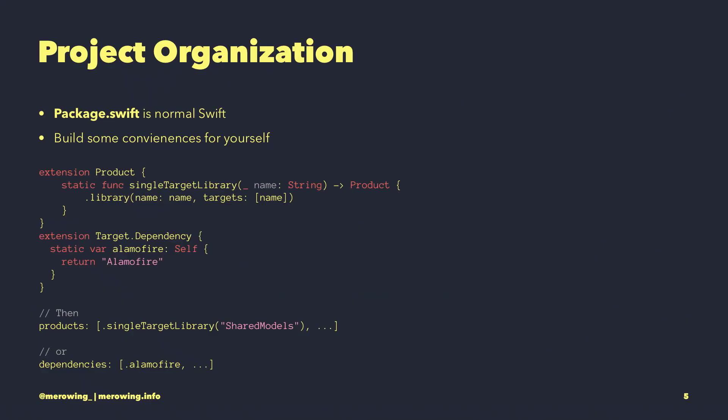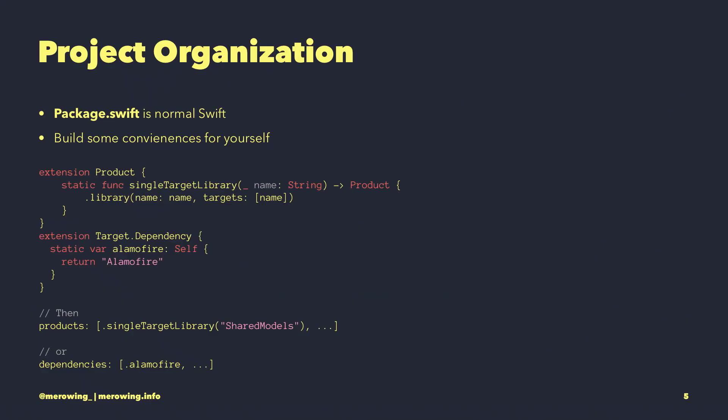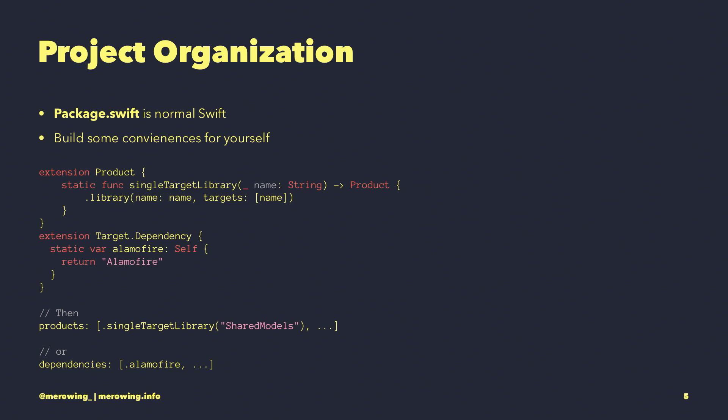People often forget that Package.swift is a normal Swift file — it's sandboxed so you can't access external things, but because it's normal Swift you can have conveniences. If you don't like some of the API, like repeating yourself, you can add an extension — for example, a single target library helper that writes the name once rather than duplicating it. I also have a set of common dependencies that pretty much all my frameworks use, automated so I don't write it for every definition.